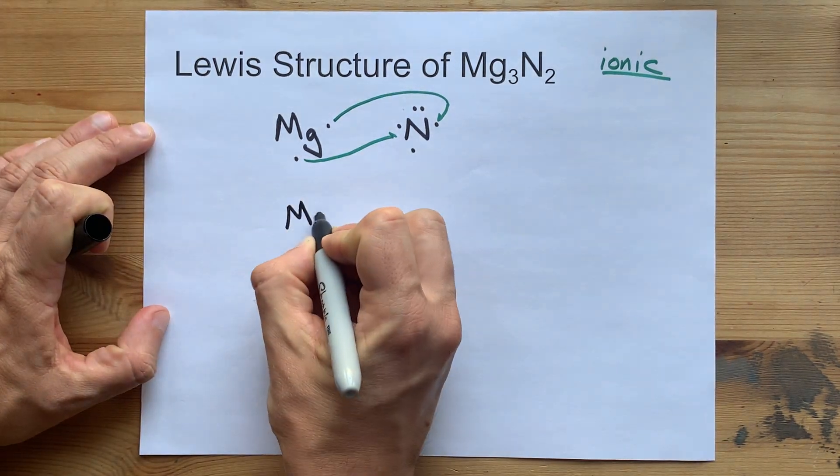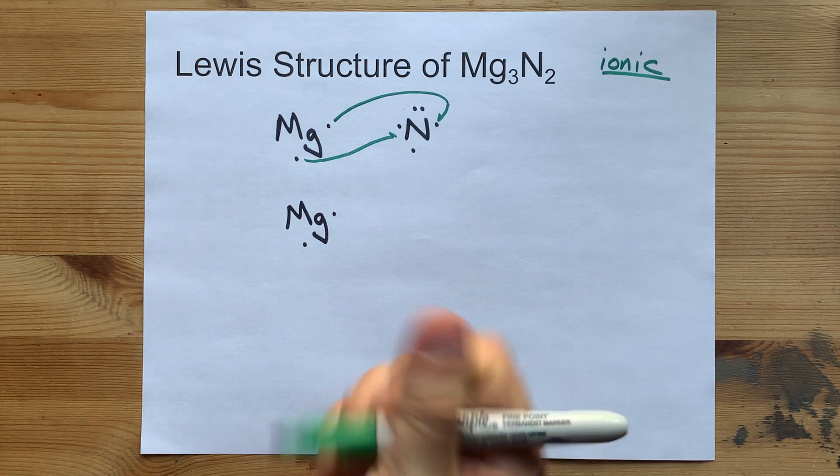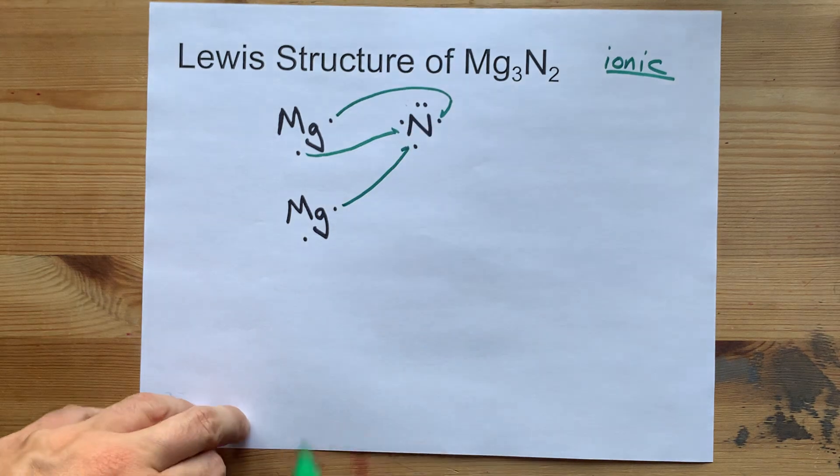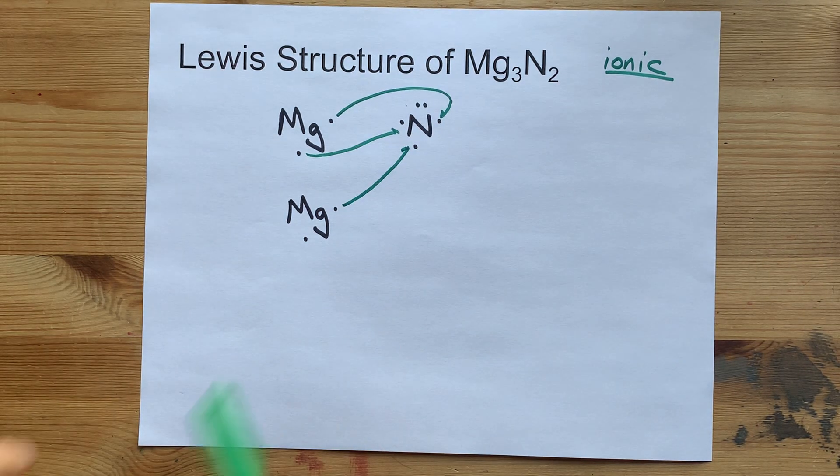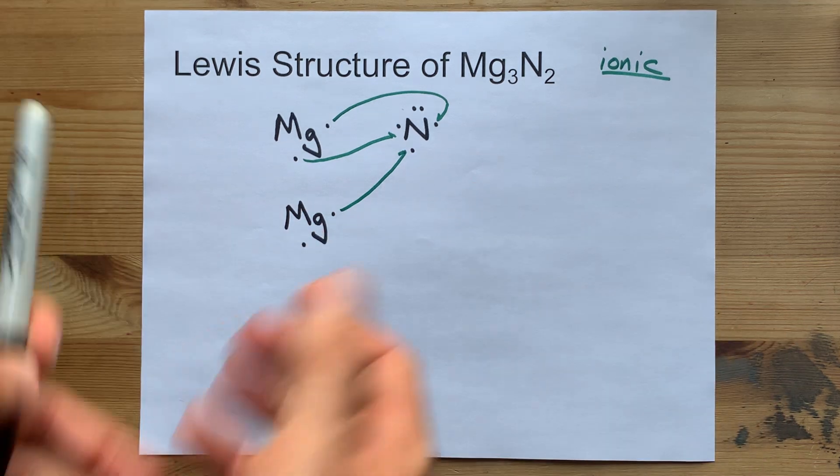So, bring in another magnesium, take one of those electrons, and use it to pair up with that one from nitrogen. Now that nitrogen is happy, but magnesium has an extra electron. What are we going to do with that?